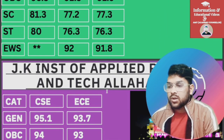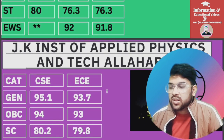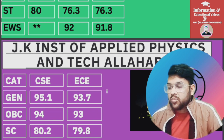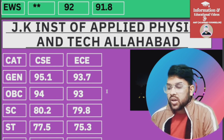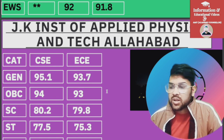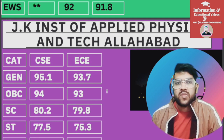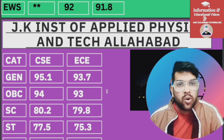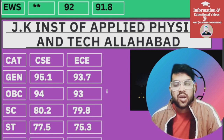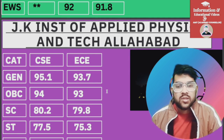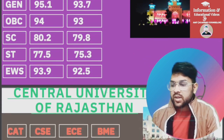For JKIAPAT Allahabad — for CSC: General 95.1, OBC 94, SC 80.2, ST 77.5, EWS 93.9 percentile. This data will be applicable for the second round as well, so please try to keep this in mind. This will help you set your target. If you have already achieved this percentile, you can be assured you will get this GFTI. If your percentile is lower, this video has important updates for you. For EC, you can check slide-wise.